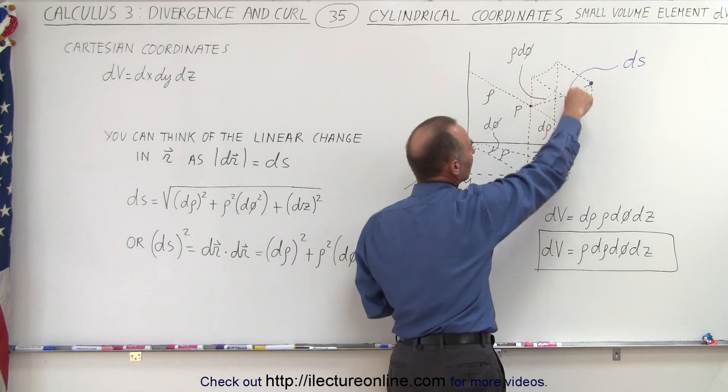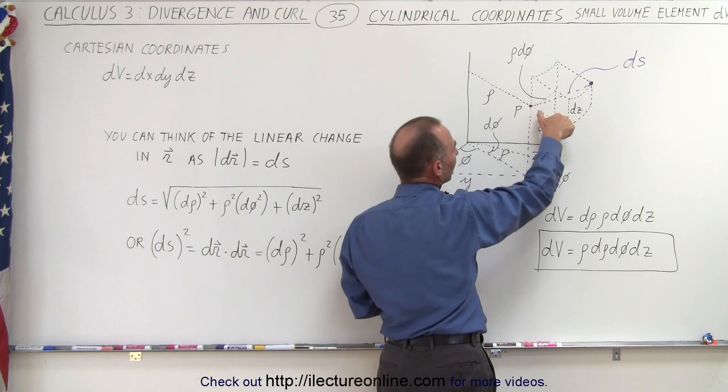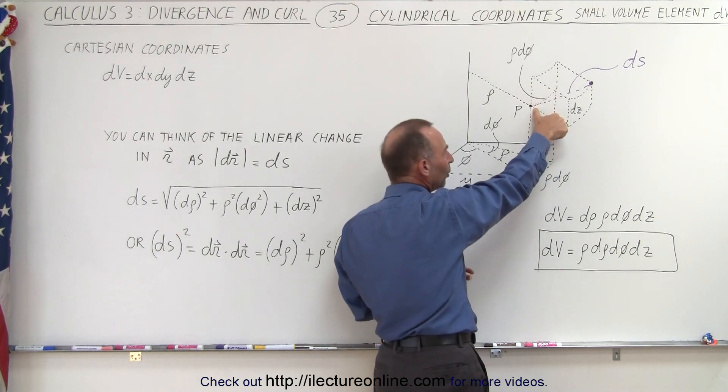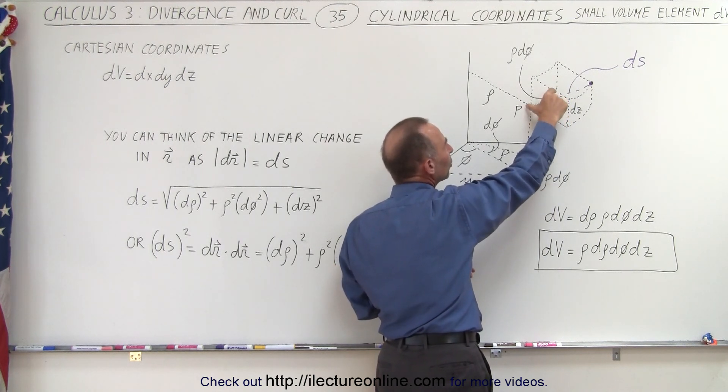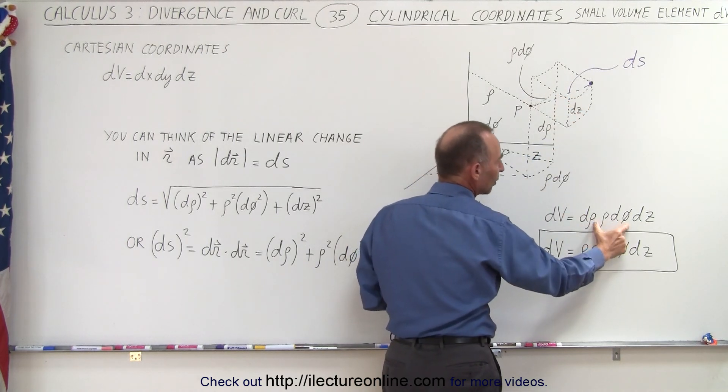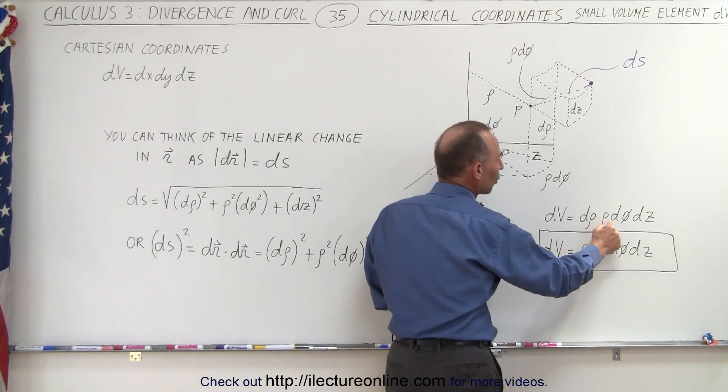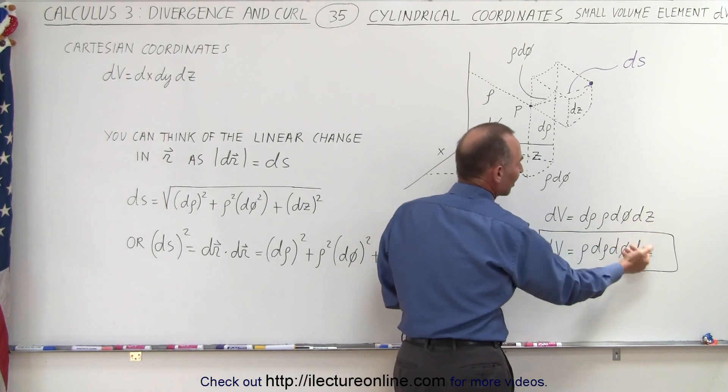So in other words, the volume element then becomes the product of d phi times rho d, I'm sorry, this is d rho times rho d phi times dz. So we have d phi rho d, I keep calling it phi, but this is d rho times rho d phi times dz.